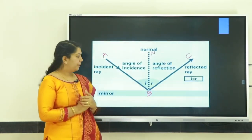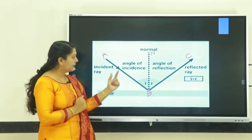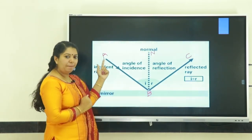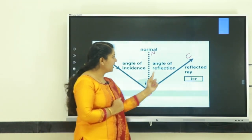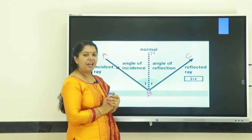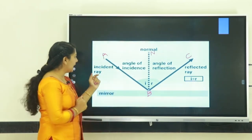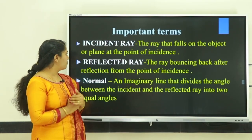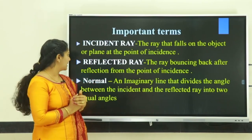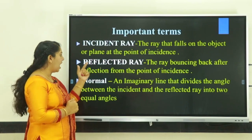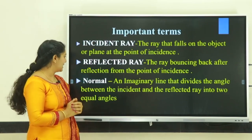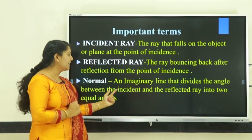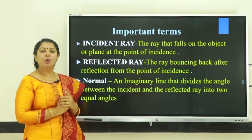Consider this figure: a ray of light incident on the mirror and that light reflects back or bounces back. Let AB be the incident ray, BC be the reflected ray, and BN be the normal. Incident ray means the ray that falls on the object or plane at the point of incidence. Reflected ray means the ray bouncing back after reflection from the point of incidence. Normal is an imaginary line that divides the angle between the incident ray and the reflected ray into two equal angles.